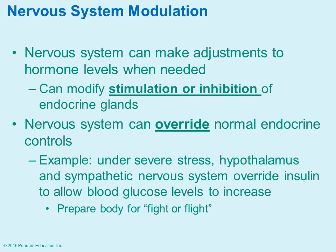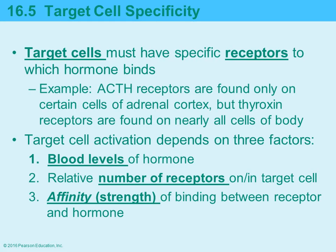The nervous system can also make adjustments to hormone levels when needed — it can either stimulate or inhibit the action of the endocrine glands, overriding normal controls. This happens under severe stress or when the body detects a potential crisis situation and the sympathetic nervous system's fight-or-flight response kicks in. It's all about survival.